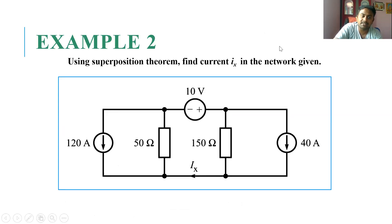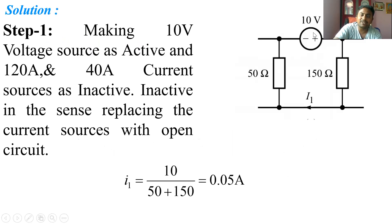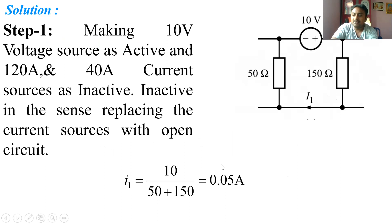Now I present an example with three sources: a 120 A current source, a 10 V voltage source, and a 40 A current source. The objective is to find the current through a specific branch. In Step 1, I make the 10 V voltage source active, so both the 120 A and 40 A current sources are inactive — replaced with open circuits. The network reduces to one voltage source with two resistances (50 Ω and 150 Ω) in series, giving I1 = 10 / (50 + 150).